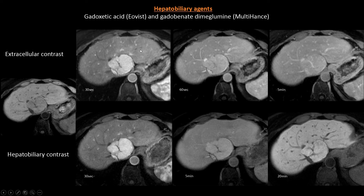Comparing extracellular and hepatobiliary contrasts: with extracellular contrast the liver lesion is iso-intense on T1, shows arterial enhancement and retains some enhancement in venous and delay phase — non-specific, as seen in adenoma, FNH, or hypervascular metastases. With hepatobiliary contrast, the lesion enhances in the arterial phase and retains contrast in the hepatobiliary phase, indicating functioning hepatocytes — the classic appearance of focal nodular hyperplasia.